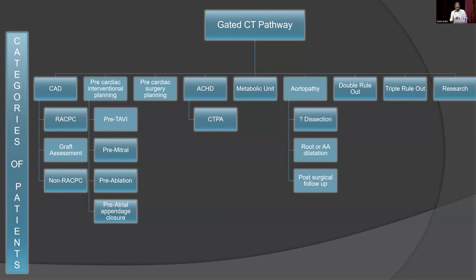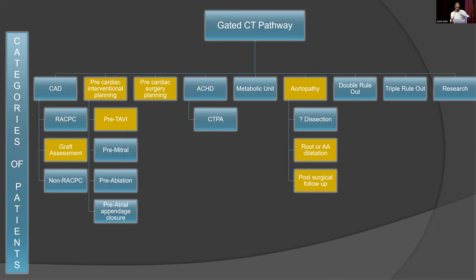We also serve congenital heart disease patients and have a significant aortopathy workload, shared with vascular interventional radiologists. We do tertiary referrals for query dissection imaging and are involved in the concept of double rule-out and triple rule-out, which is gaining popularity for rapid ED discharge. Because of our close collaboration with the University of Manchester, we are a primary site for research development. Over 90% of my work now involves cardiac only — I started 50-50 with thoracic but the cardiac workload has grown enormously.